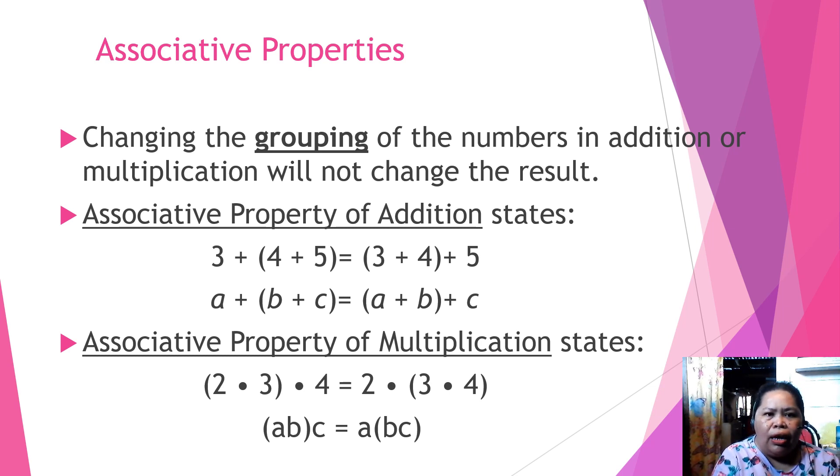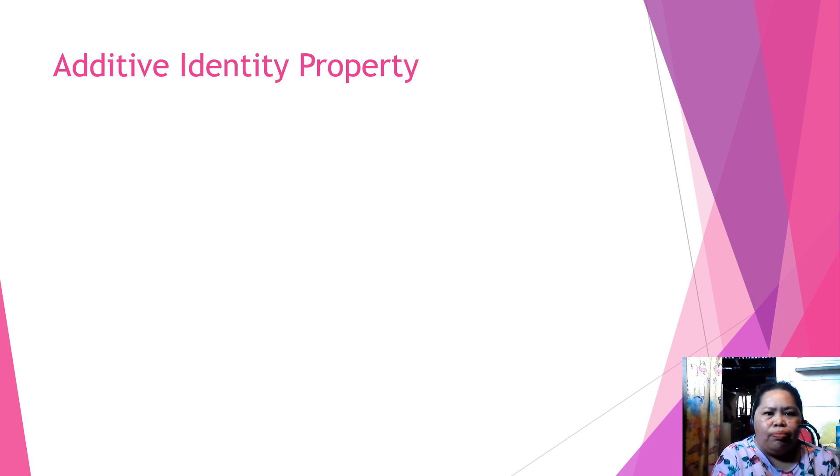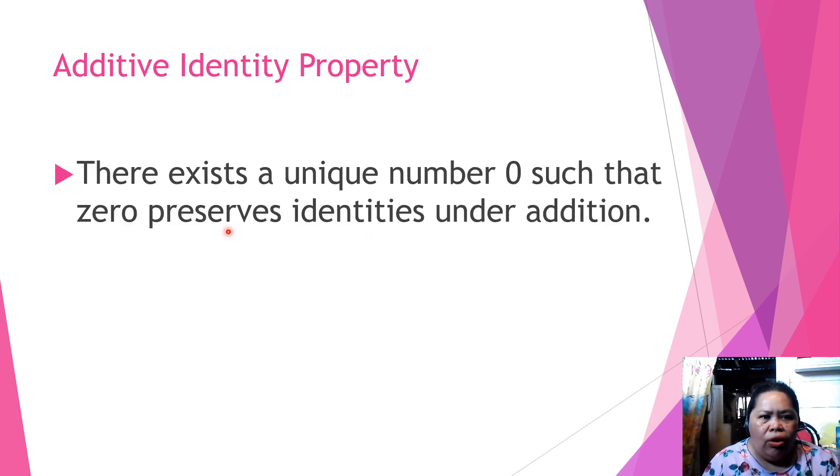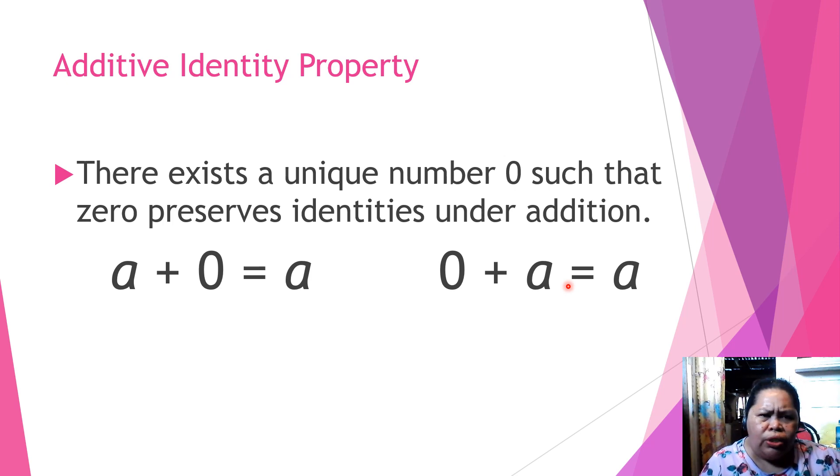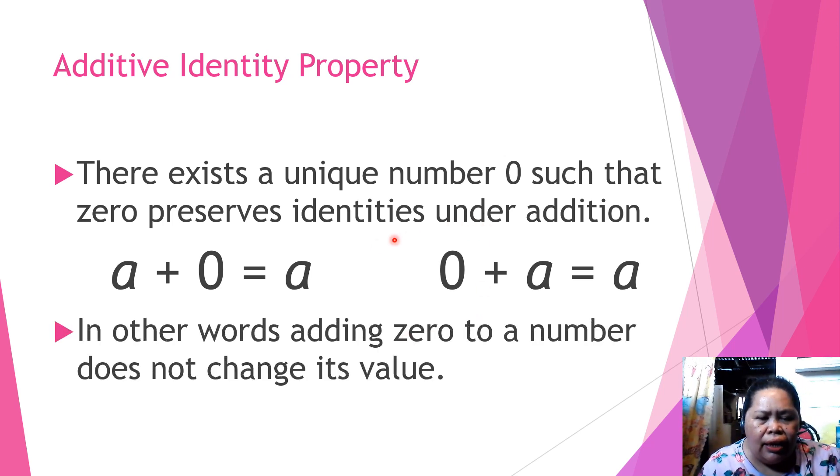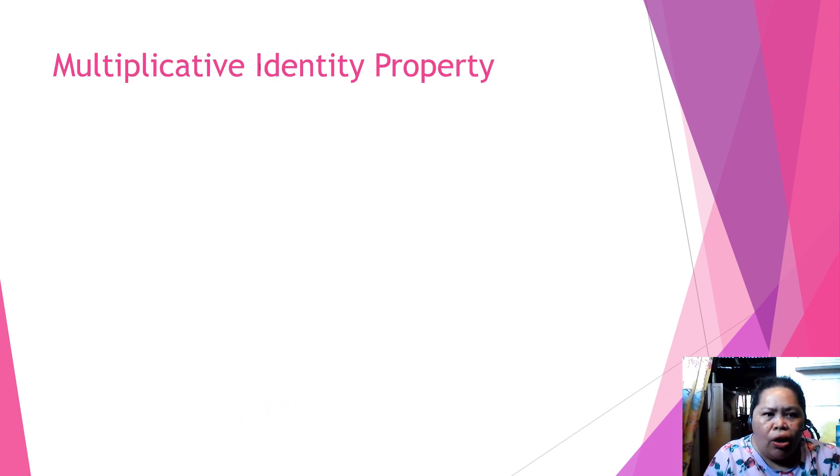We have additive identity property. There exists a unique number 0, such that 0 preserves identities under addition. The additive identity property is 0. A plus 0 is equal to A, or 0 plus A is equal to A. In addition, the additive 0 is equal to itself. In other words, adding 0 to a number does not change its value.